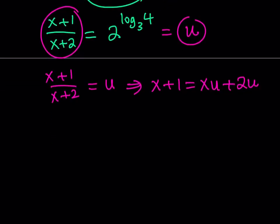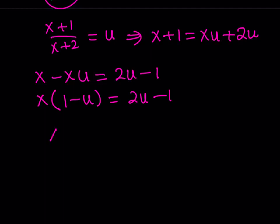Since I'm trying to solve for x, let me subtract xu from x and subtract 1 from 2u. Now let's take out x(1-u) and then 2u-1, and obviously our goal is to solve for x.